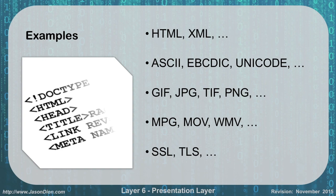Some examples of this: HTML and XML, which are used for web page formatting. ASCII, EBCDIC, and Unicode are three different methods of doing text formatting. GIF, JPEG, TIFF, and PNG files are all graphic image formats. MPEGs, movies, and Windows media files for video. SSL and TLS for website encryption. All of these are good examples of what we're doing at the layer 6 presentation layer.